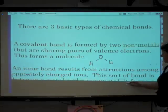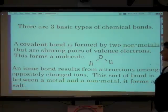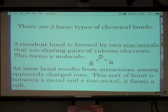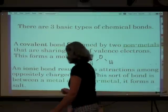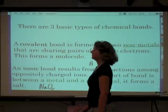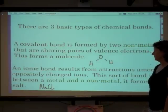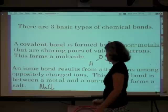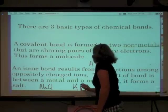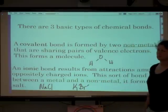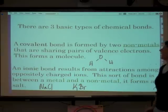An ionic bond results from attractions among oppositely charged ions. You don't know what an ion is yet, but you will tomorrow. Though you have flashcards that have ions on them. This sort of bond is between a metal and a non-metal. And it forms a salt. So, a typical salt that we know of is sodium chloride, NaCl. Potassium bromide, KBr, is also a salt, an ionic compound.